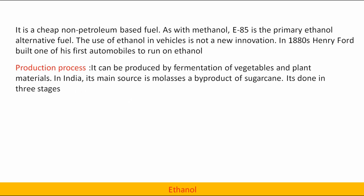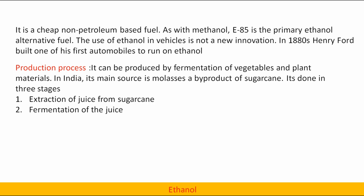Production process: Ethanol can be produced by fermentation of vegetables and plant materials. In India, its main source is molasses, a by-product of sugarcane. It is done in three stages: extraction of sugar from sugarcane, fermentation of the juice, and distillation.